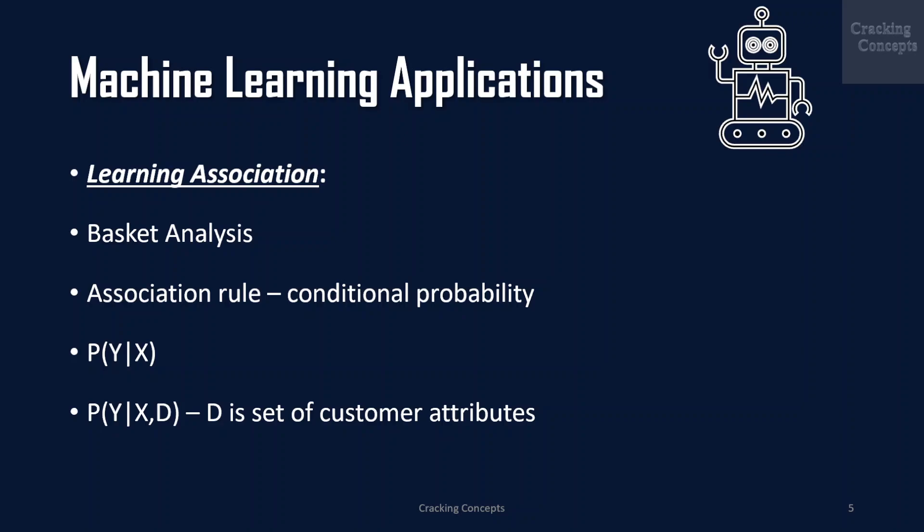Now let us look into examples of machine learning applications. The first one will be learning associations. In case of retail, for example a supermarket chain, one application of machine learning is basket analysis, which is finding associations between products bought by customers. If people who buy X typically also buy Y, and if there is a customer who buys X but does not buy Y, then he or she is a potential Y customer. Once we find such customers, we can target them for cross-selling.